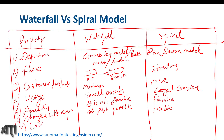The seventh property is cost. The waterfall model is less expensive compared to the spiral model. The spiral model is very expensive because it requires a lot of manpower and greater team strength.